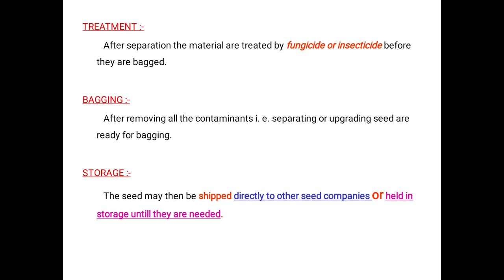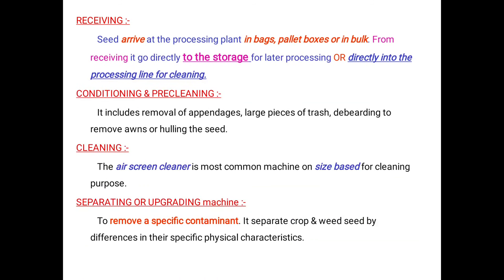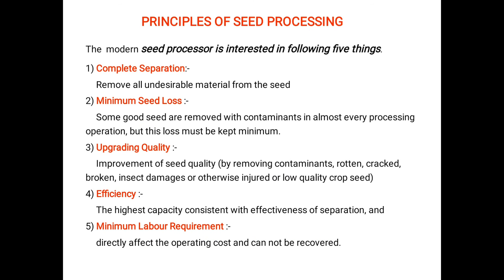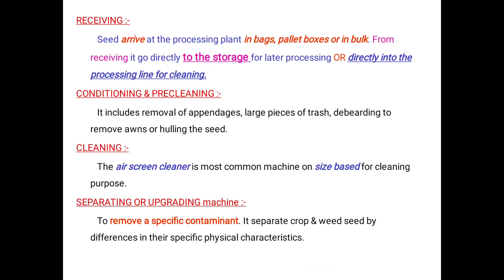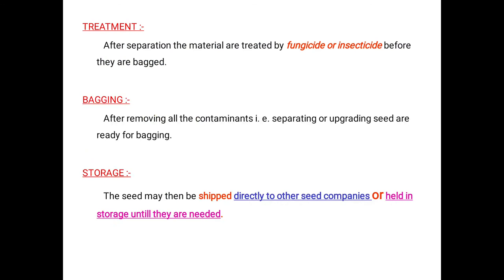These are the actual principles of seed processing in brief. In this topic we discussed the five main principles: complete separation, minimum seed loss, upgrading quality, efficiency, and minimum labor requirement. We also discussed the different major steps in seed processing. The actual treatment given to seeds will be discussed in detail in the next lecture. Thank you.